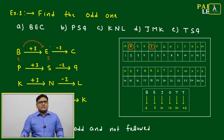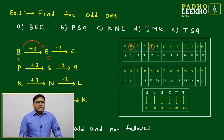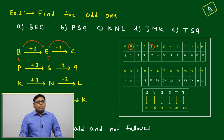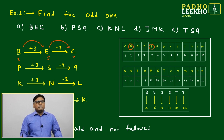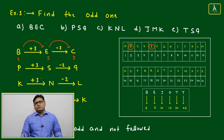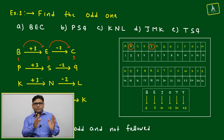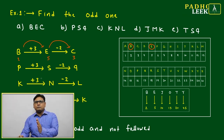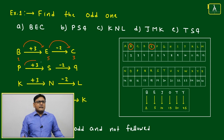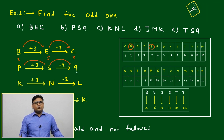After E, we go back by minus 2, and we come to C. So the pattern is: add 3 to the first alphabet, then go back by 2. Similarly, P plus 3 gives S, and S minus 2 gives Q.